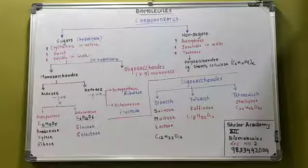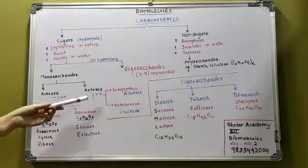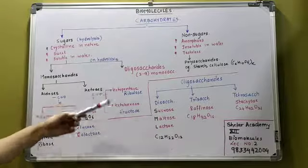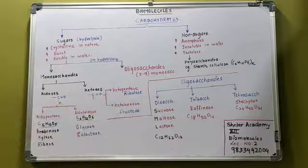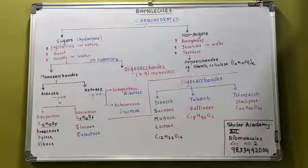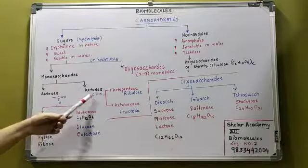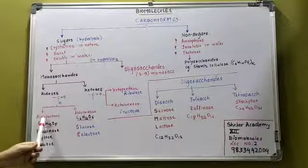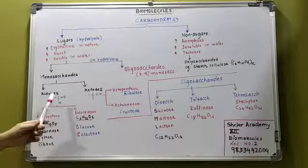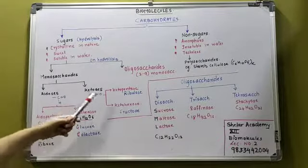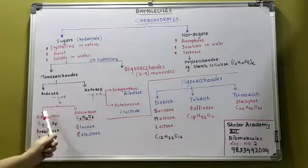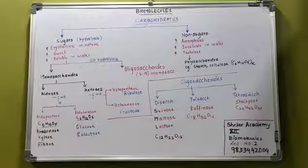Keto pentose: the functional group is ketone and the number of carbon atoms are 5. The example is ribulose. It has the same molecular formula as aldo pentose because they are functional isomers of each other — the only difference is their functional group.